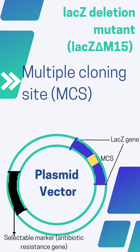On the other hand, if the gene of interest is not inserted into the vector at the multiple cloning site, or is inserted at some other location, then the lacZ gene remains functional. The lacZ gene will then complement the lacZ deletion mutation in the host E. coli, and the host E. coli will start producing the functional enzyme.